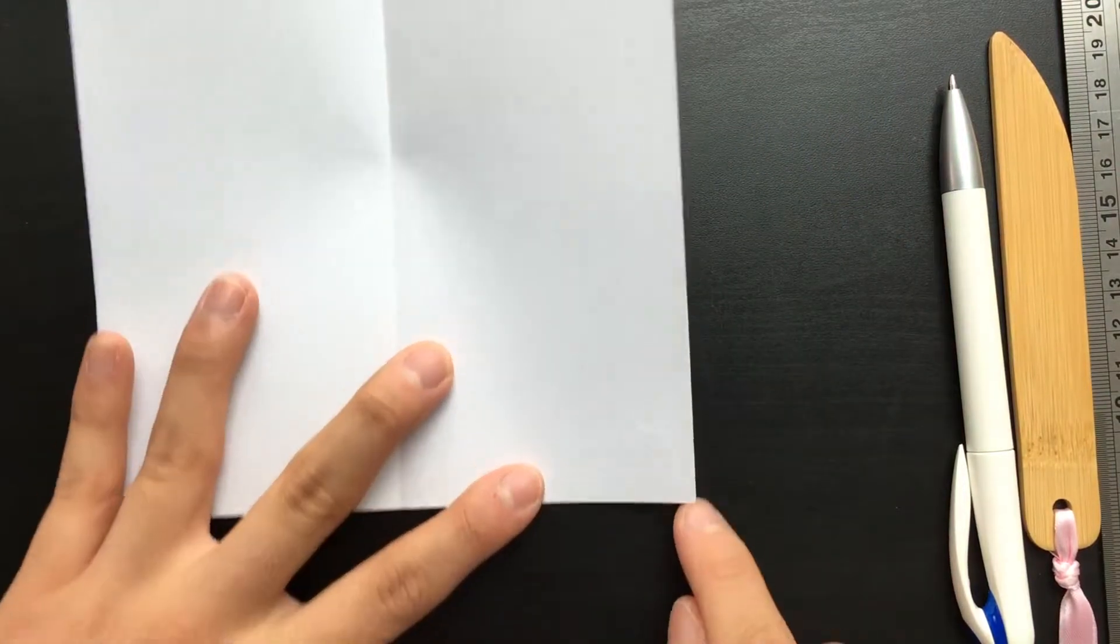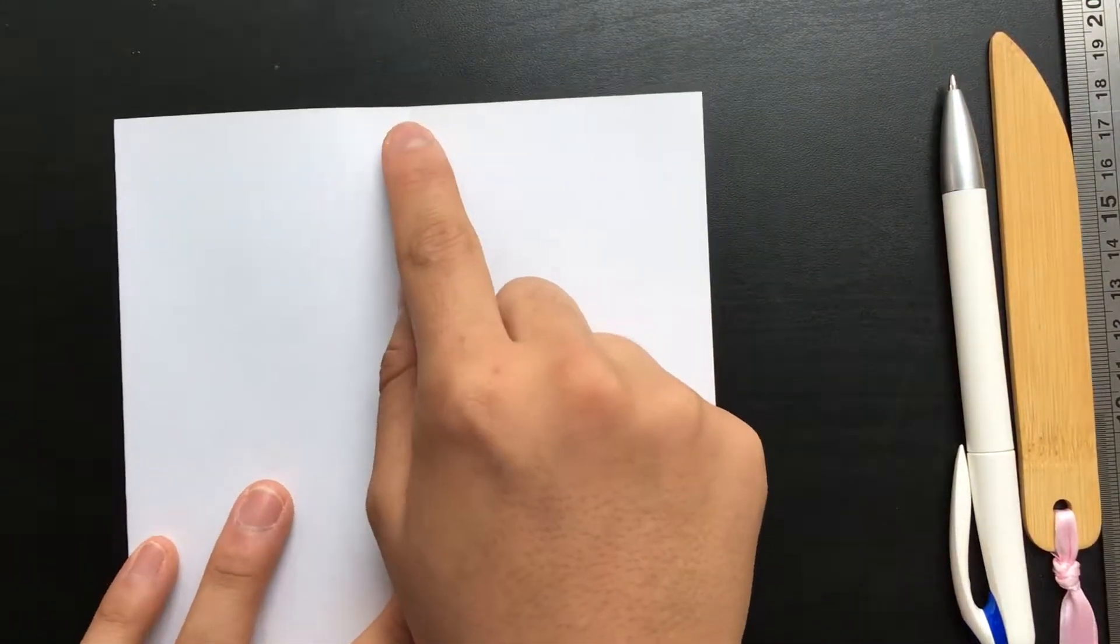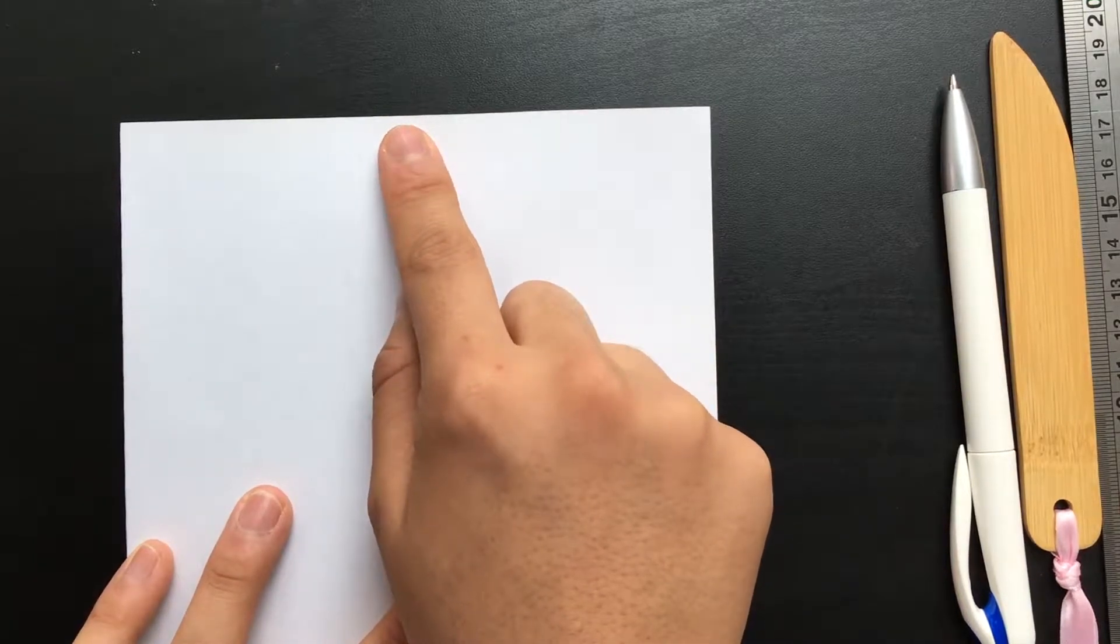Next what you want to do is fold from the bottom right corner, right here, to the top midpoint, the midpoint of the top edge which we just marked.